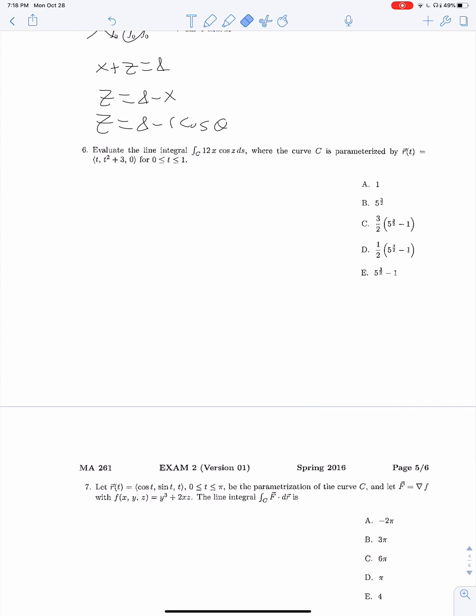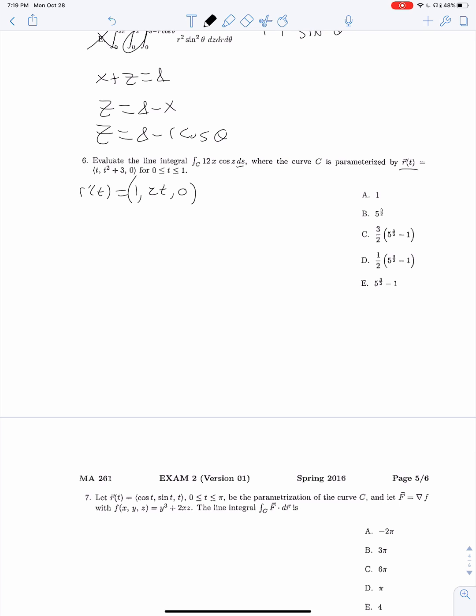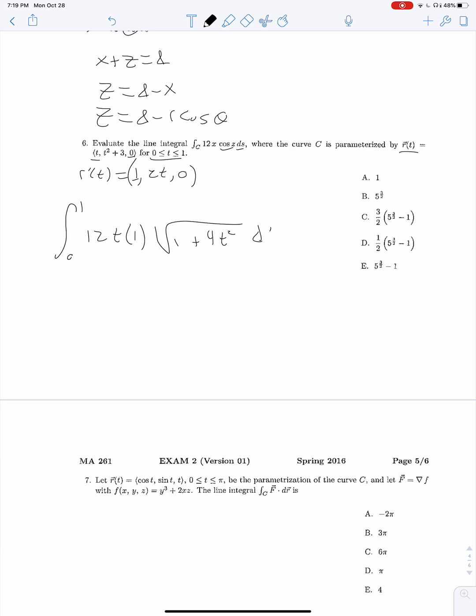Question 6. We're evaluating a line integral. It's weird that line integrals are this early in the exam, but I'm not really complaining. We have our r of t. We're going to need r prime of t because we have a ds. So r prime of t is 1, 2t, 0. Now we can set up our integral from 0 to 1 of 12x. Well, x is just t, so 12t cosine of z. z is just 0, and cosine of 0 is 1. Times 1, and then ds, which is the square root of 1 squared plus 4t squared, which is 1 plus 4t squared, and dt.